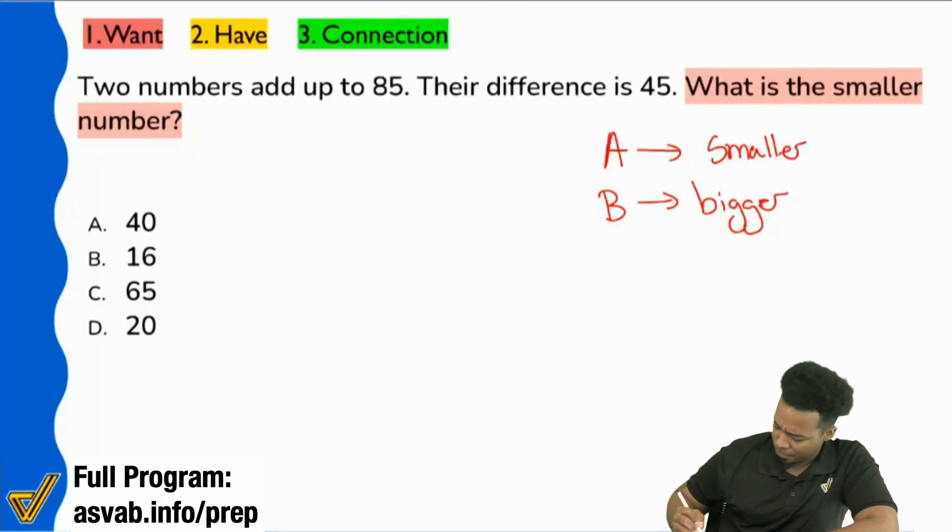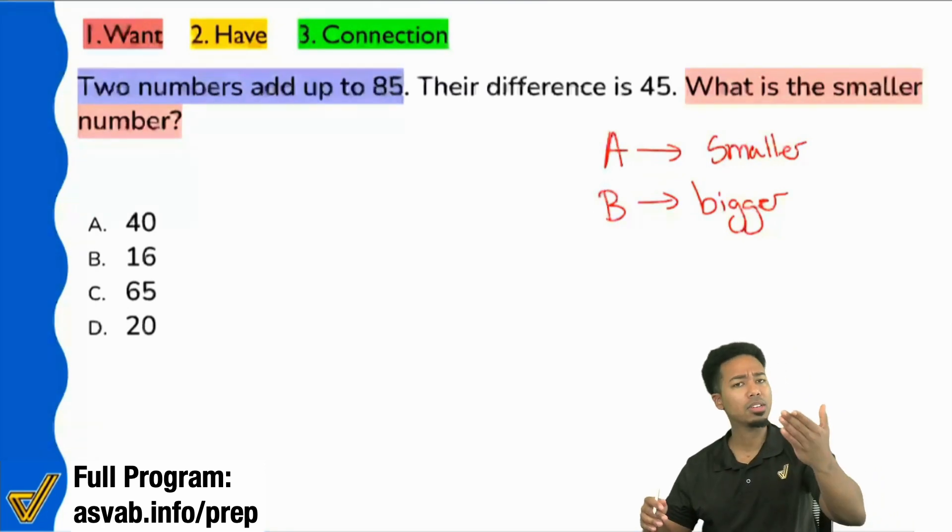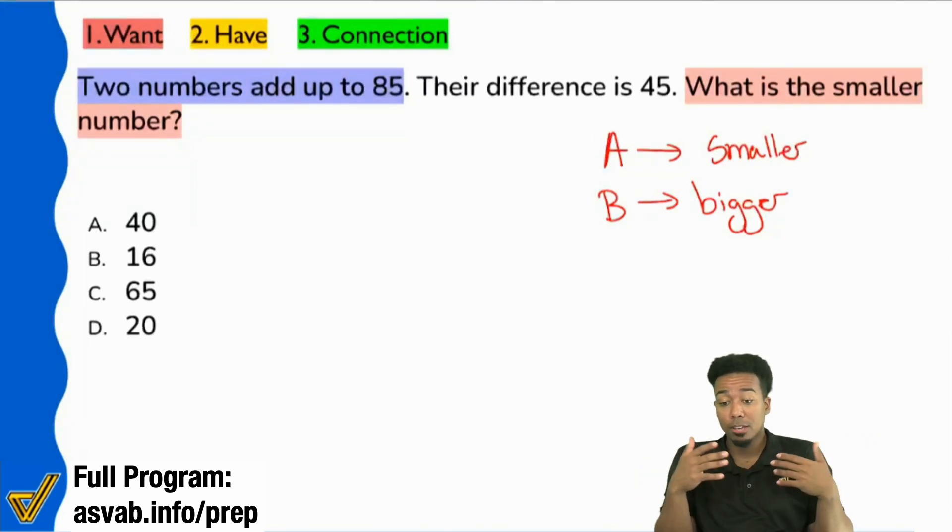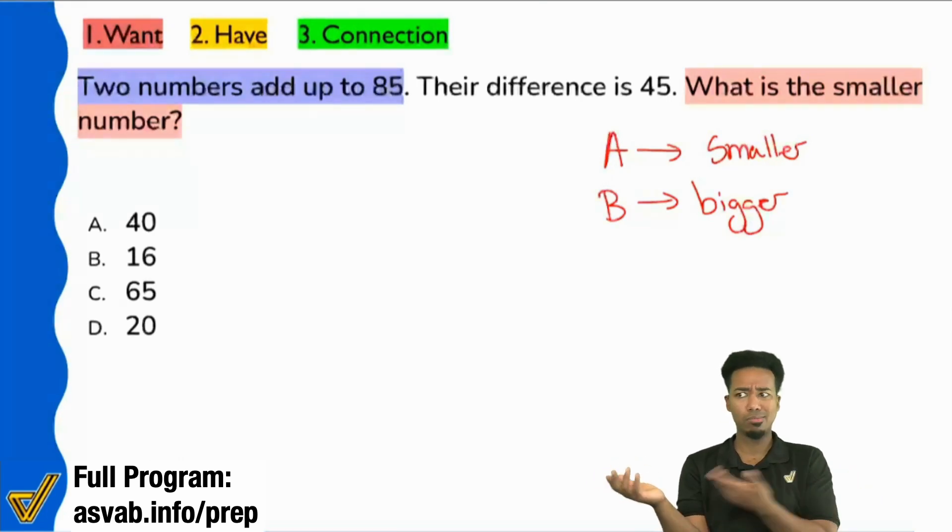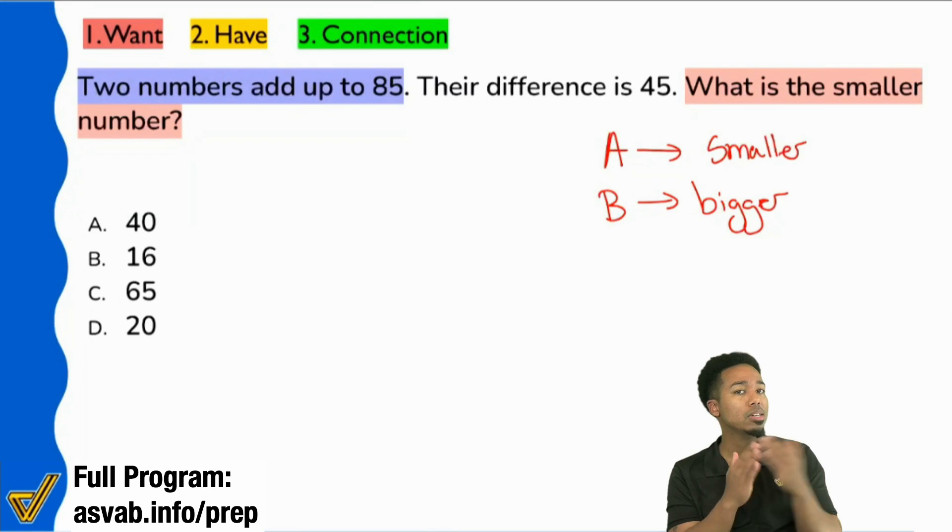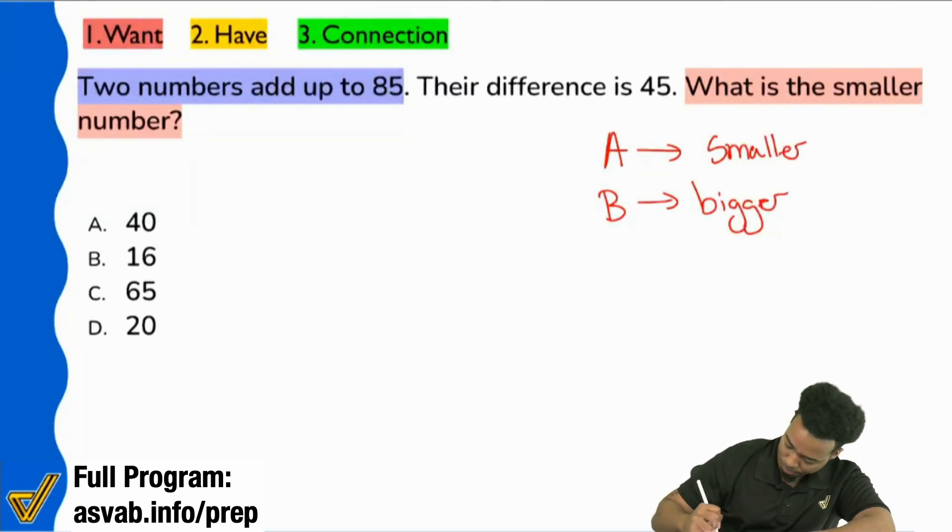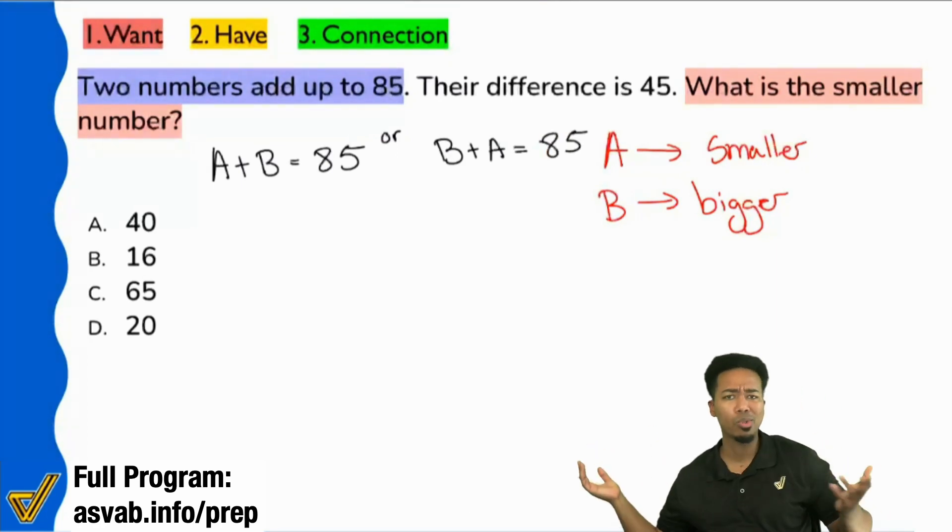Let's set it up. First sentence says two numbers add up to 85. Can somebody give me the equation to represent that using A and B? Yeah, A plus B equals 85. We can also say B plus A equals 85. Both are correct. One plus two is the same as two plus one. So I'll write A plus B equals 85, or B plus A equals 85.